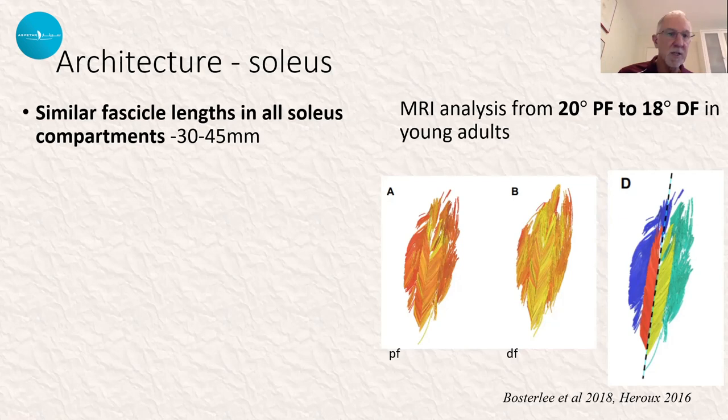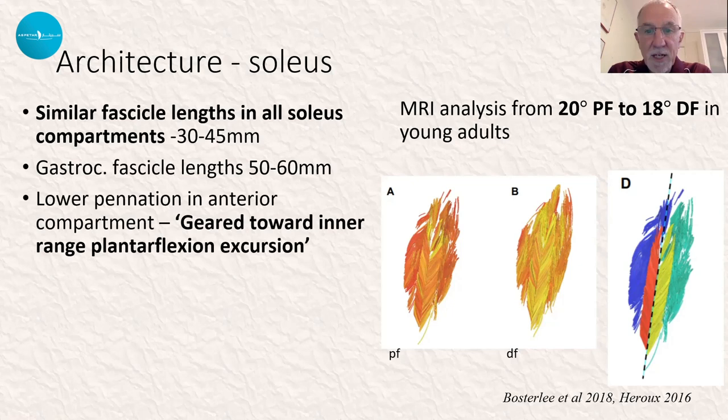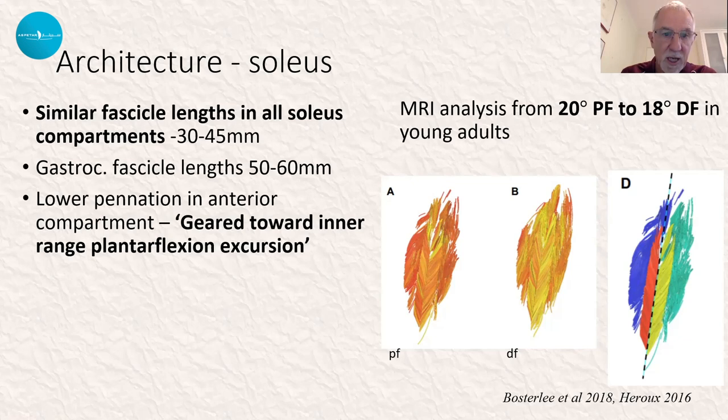The fascicle lengths of soleus are actually reasonably short — some 30 to 45 millimetres — which contrasts quite a bit with gastrocnemius, which was around 60 millimetres or so. The anterior portion that I described has lower pennation angles, and Bostoli's group described that it's geared much more towards inner range excursion and certainly inner range plantarflexion.